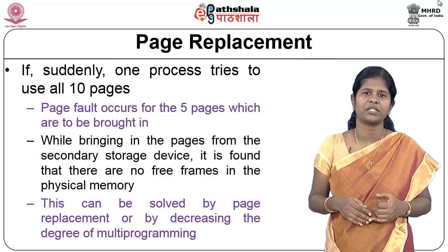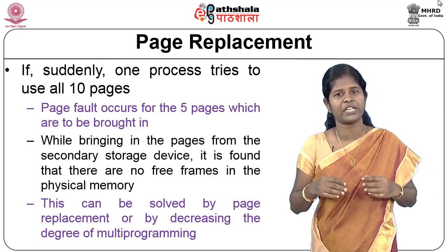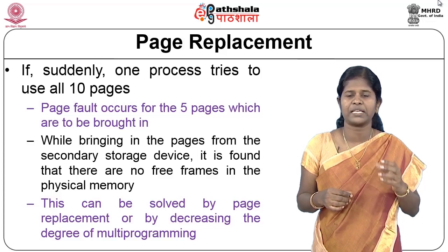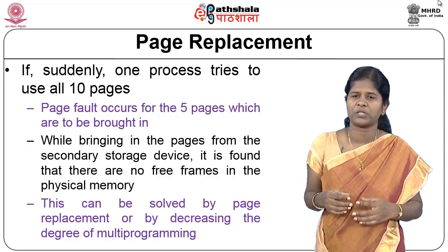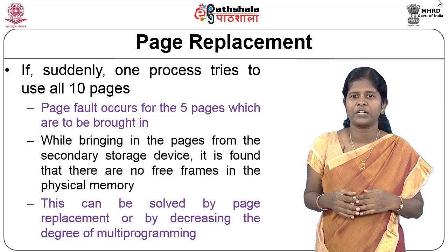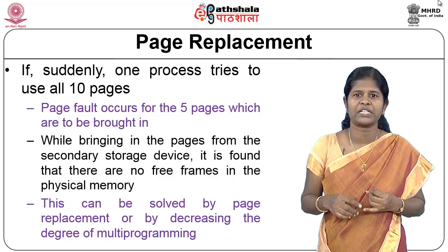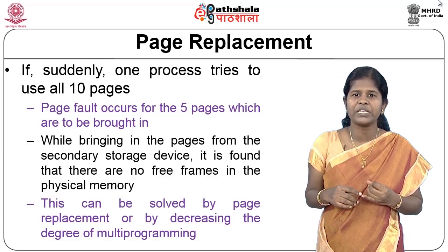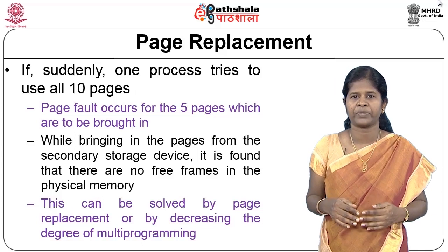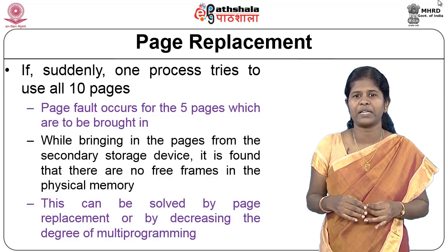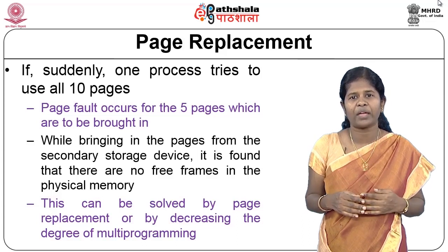One solution is to decrease the degree of multiprogramming. By removing two processes, 10 pages become free in the physical memory, giving you more free frames. This is one way to avoid the problem by reducing the number of processes using the physical memory.